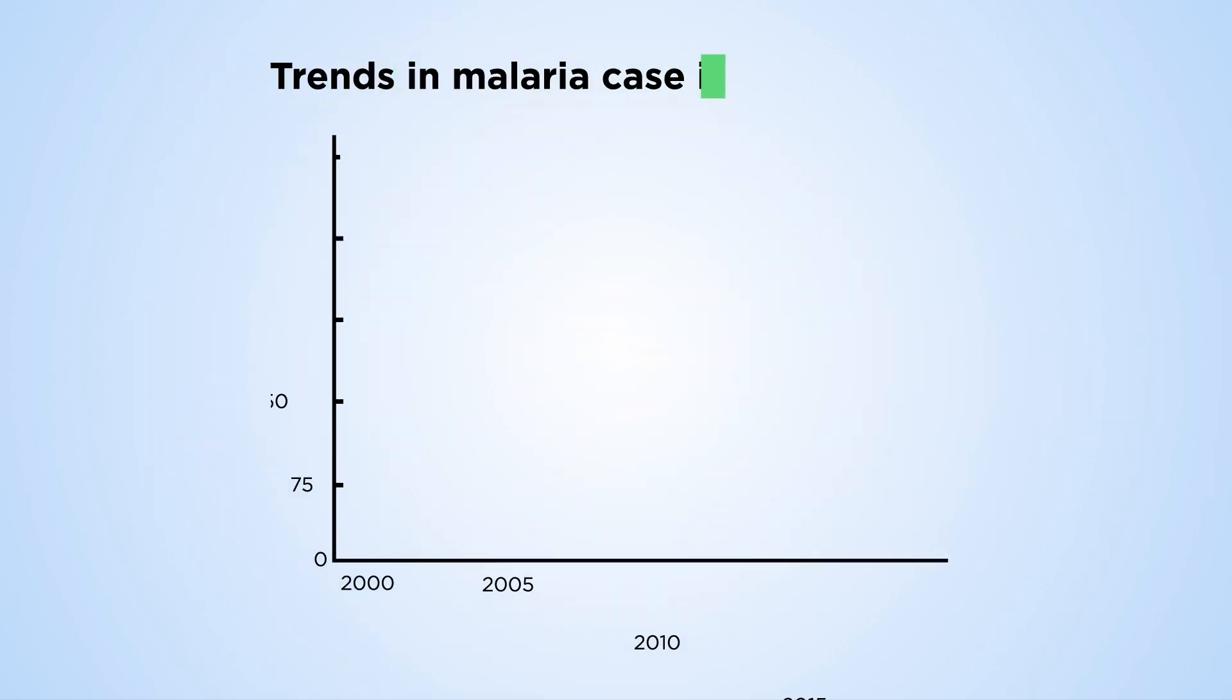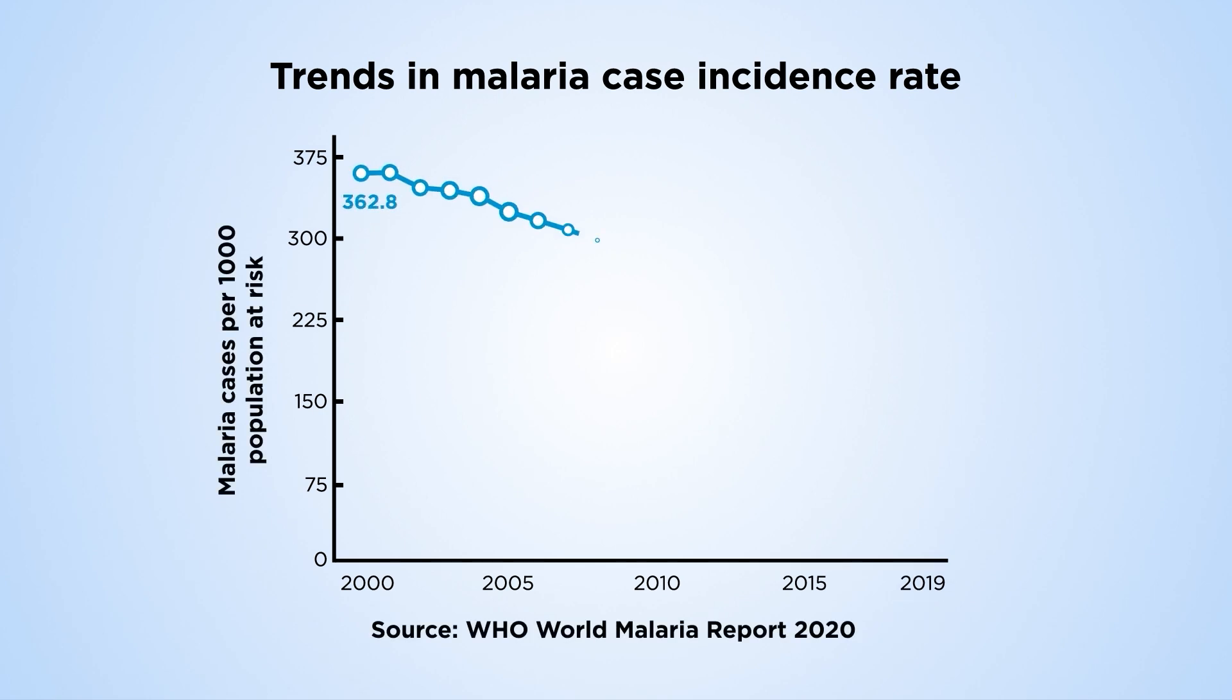Between 2000 and 2019, malaria mortality fell by 60% due to effective vector control interventions, fast, accessible and efficient diagnosis and treatment.